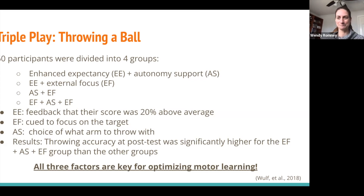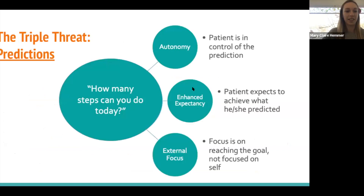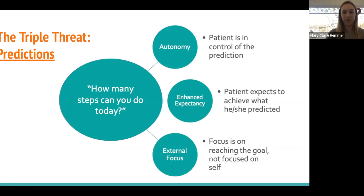So how can we do that in PT? In addition to the examples we went over, predictions are a great way to hit all three at once. For example, if I ask a patient, 'How many steps can you do today?' — you're giving them autonomy because the patient is controlling the prediction; enhanced expectancies because most likely the patient will set a goal they think they can achieve; and external focus because they're not worrying about what they look like on the stairs, they're just climbing until they hit that goal.